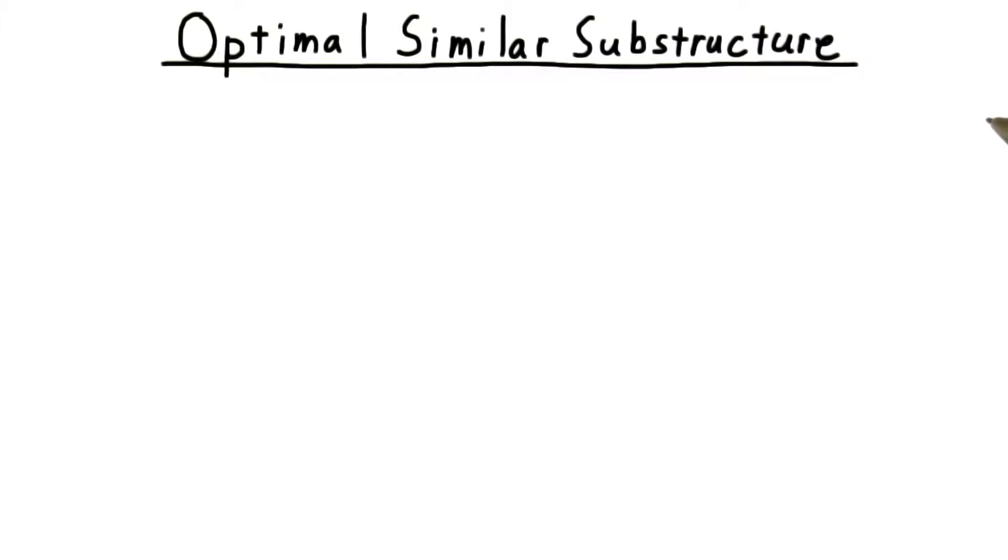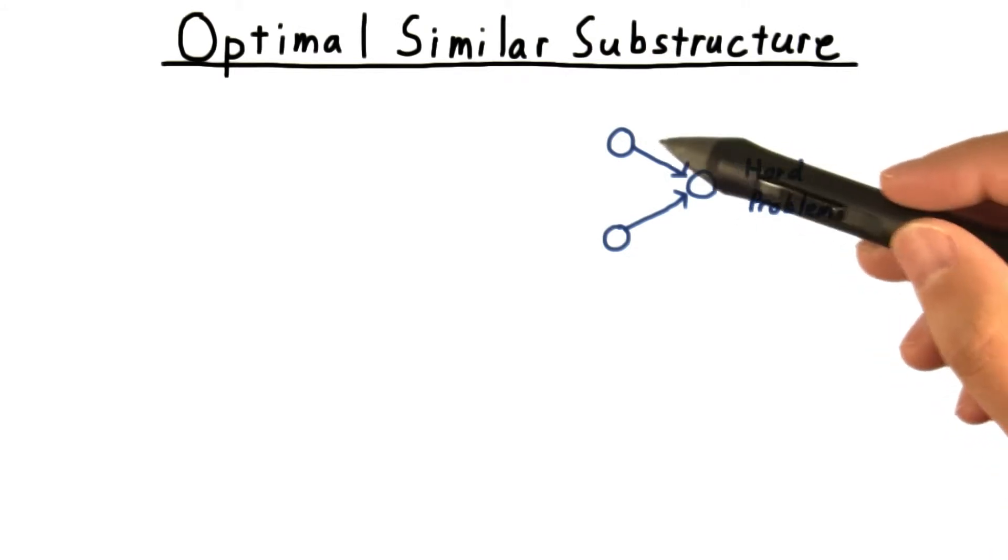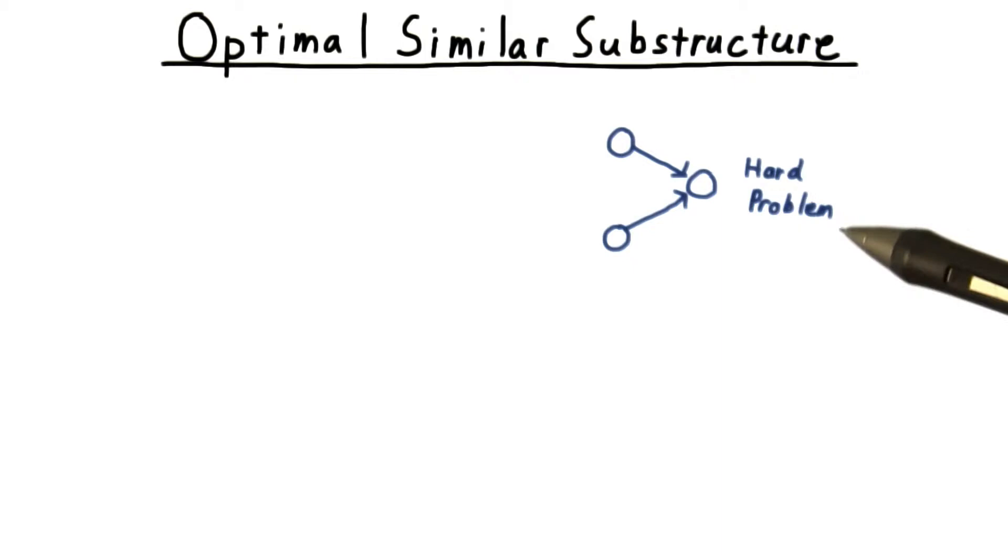The absolutely indispensable element of dynamic programming is what we'll call an optimal similar substructure. By this, I mean that we have some hard problem that we want to solve, and we think to ourselves, if I only had the answer to these two similar smaller subproblems, this would be easy.